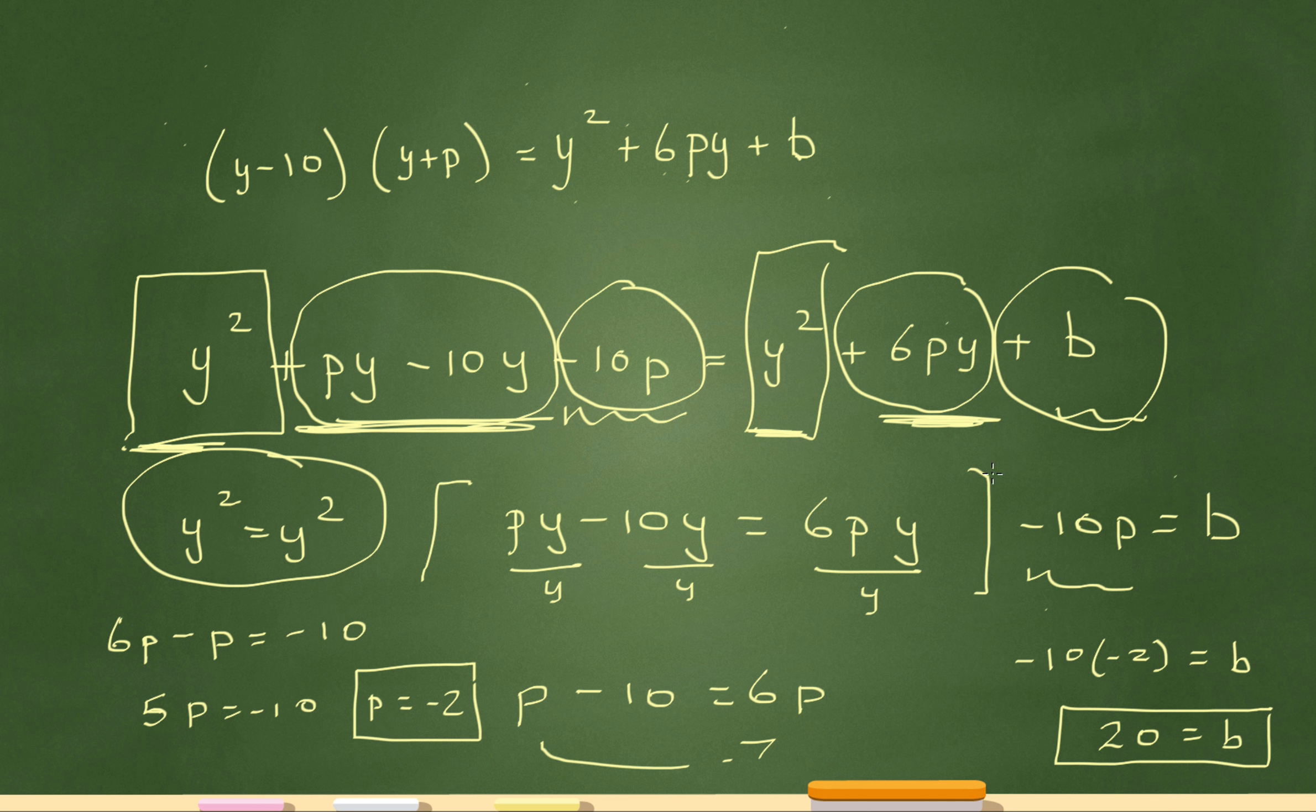Then I started working with this one because there's a y in common in all of them. So I divided everything by y. And then I got p minus 10 equals 6p. Then I combined my like terms by bringing the p to this side. So that became 6p minus p equals negative 10.